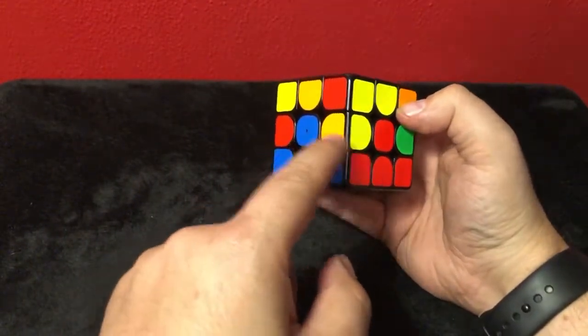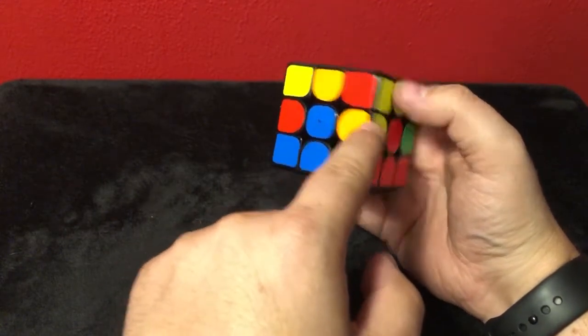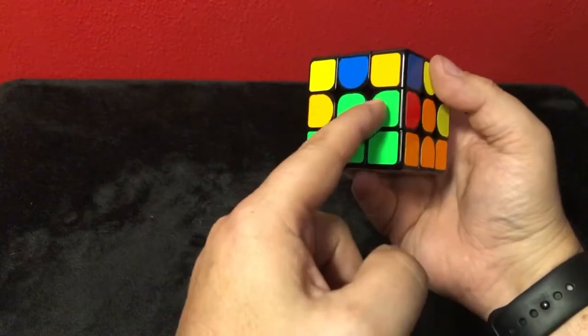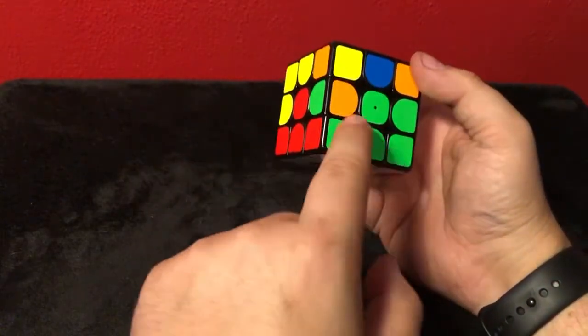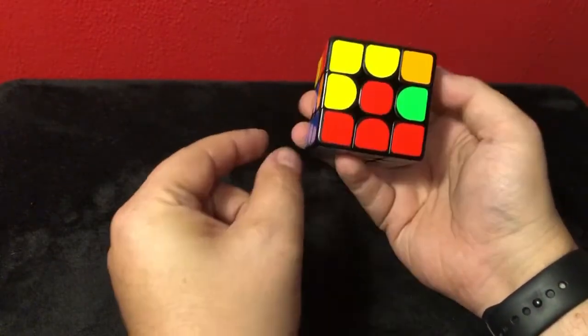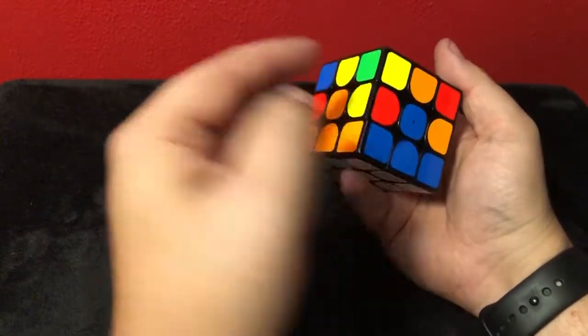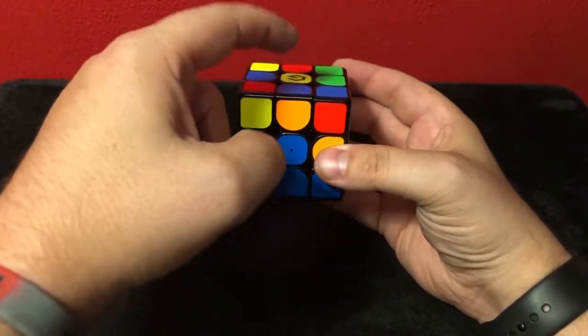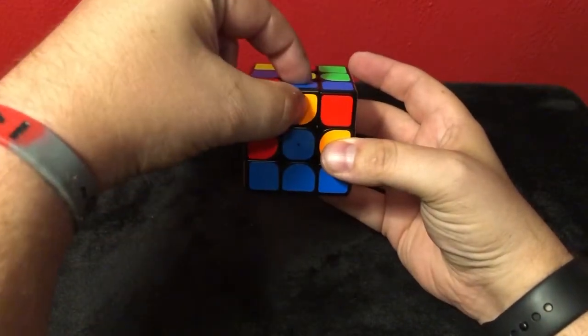So now we need to fill in these side pieces and make sure that they match. So we want orange here, green here. That one's wrong. We need green, red. That's wrong. Red, blue. That's wrong. Blue, orange. That's wrong. So most of the time you're gonna find them up here and they got to go from here over.